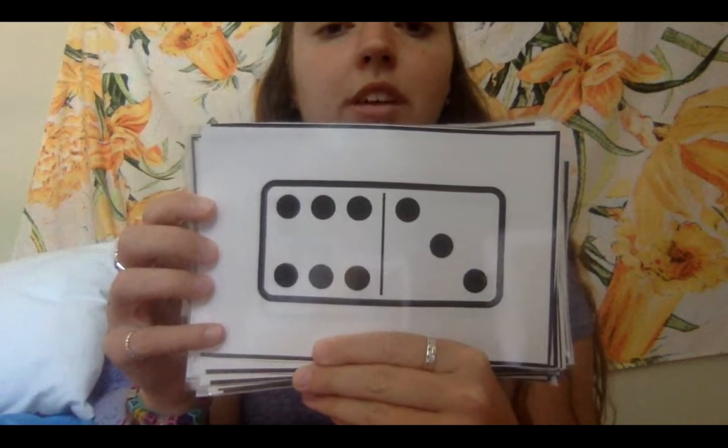How many do you see? I see nine again. One, two, three, four, five, six, seven, eight, nine. Three groups of three.